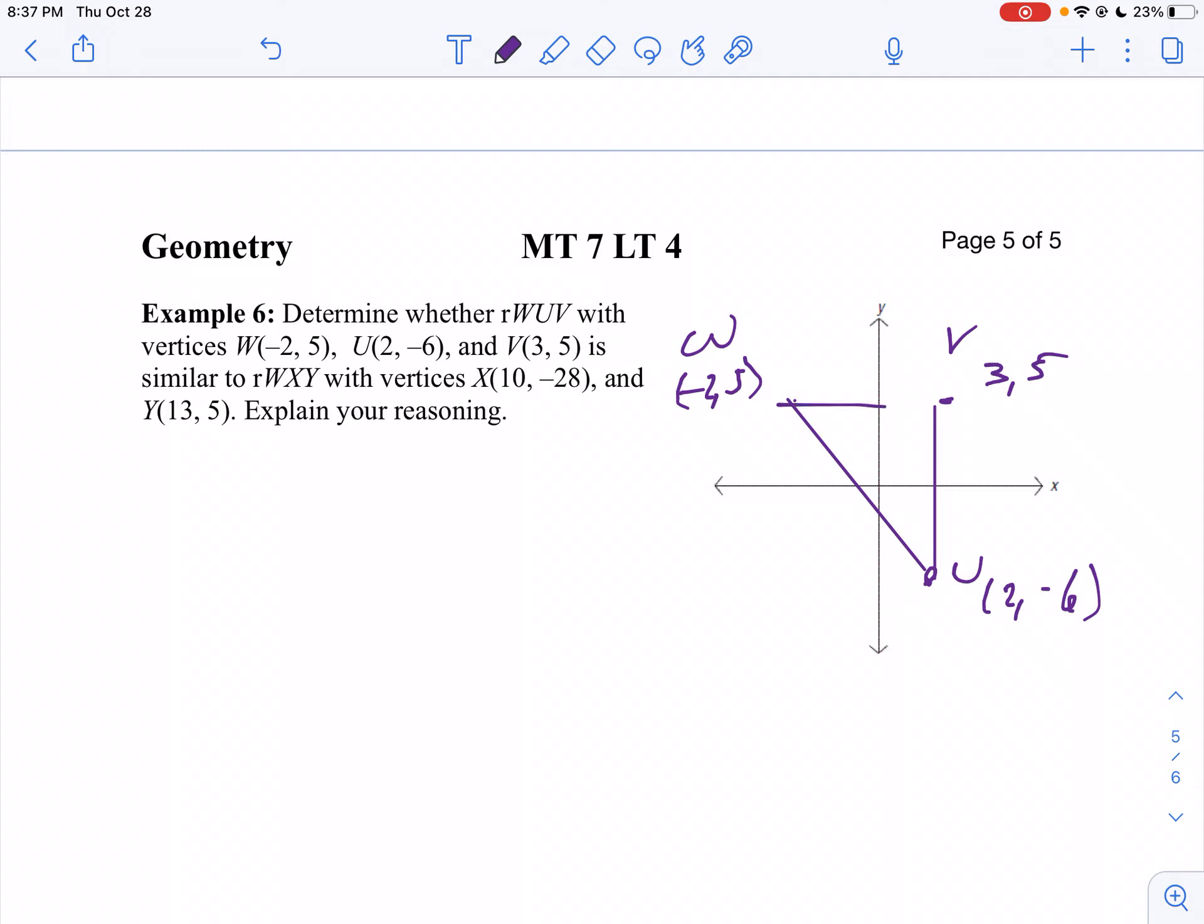And compare that to triangle WXY. We already got W plotted, don't we? So X is going to be at 10 and negative 28. So X is way down here at 10 and negative 28.